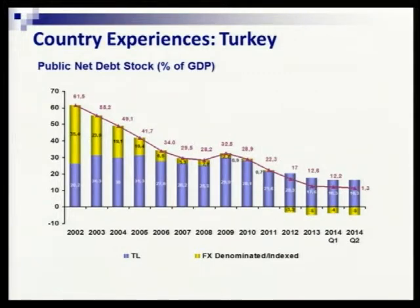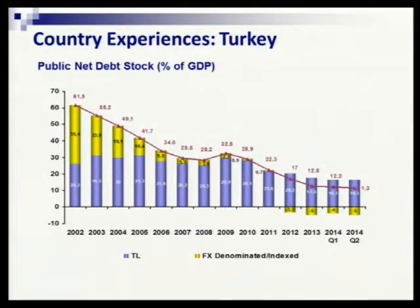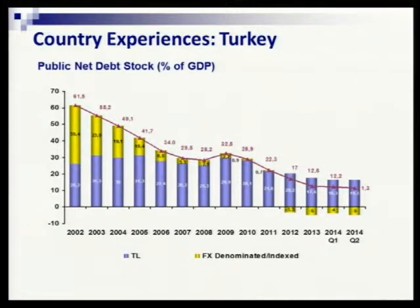This chart shows the public net debt stock as a percentage of GDP. Looking at the past 10-12 years, we see a major significant change in the foreign currency denominated debt stock. Back in 2002 it was 35% of GDP. Now we have a negative number — meaning we have a positive net value in terms of net debt stock. When we calculate net debt stock, we deduct public sector financial assets from gross domestic and foreign liabilities of the public sector.